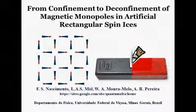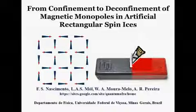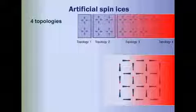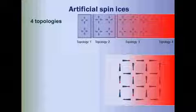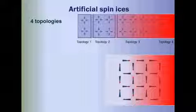From Confinement to the Deconfinement of Magnetic Monopoles in Artificial Rectangular Spin Ices. In 2006, a group from Penn State University built an artificial version of the spin ice materials by using elongated magnetic nano-items organized in a square lattice.